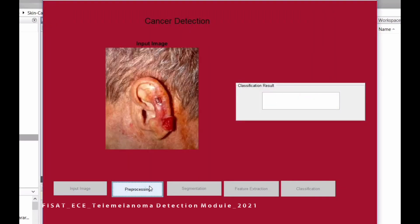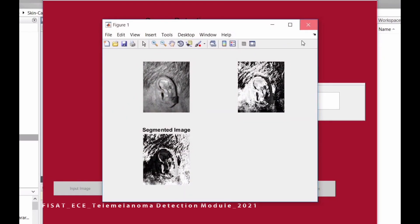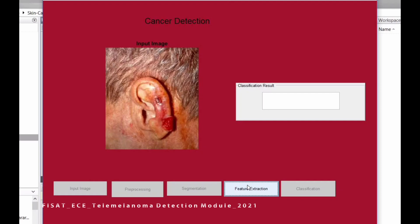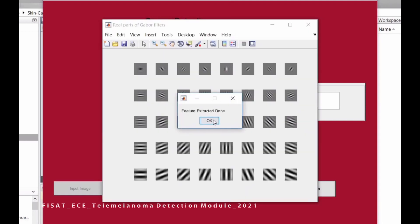Then it is subjected to various pre-processing for noise removal and image enhancement. The image undergoes segmentation. Feature extraction is the process of extracting unique features from the segmented image.